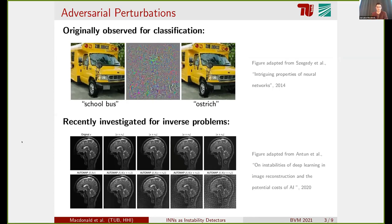Here we have an example for the automap network that reconstructs magnetic resonance images. You see that in the top row that barely visible perturbations to the inputs can lead to clearly visible perturbations in the reconstructions.